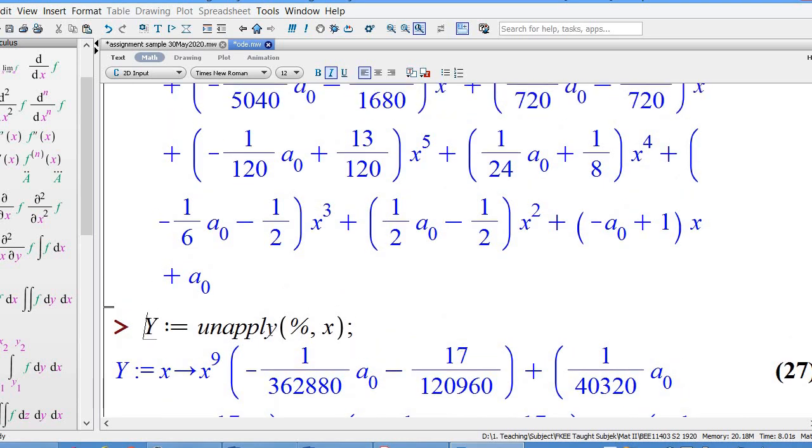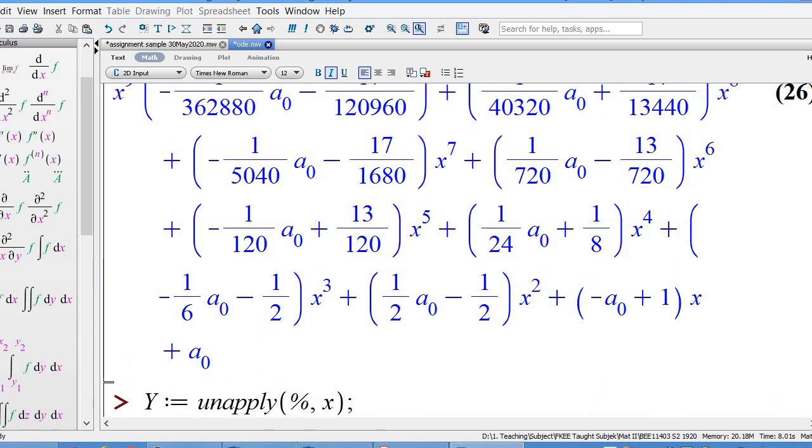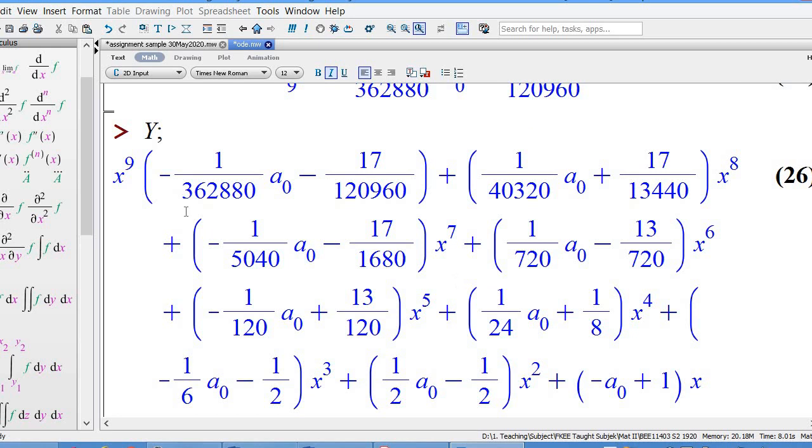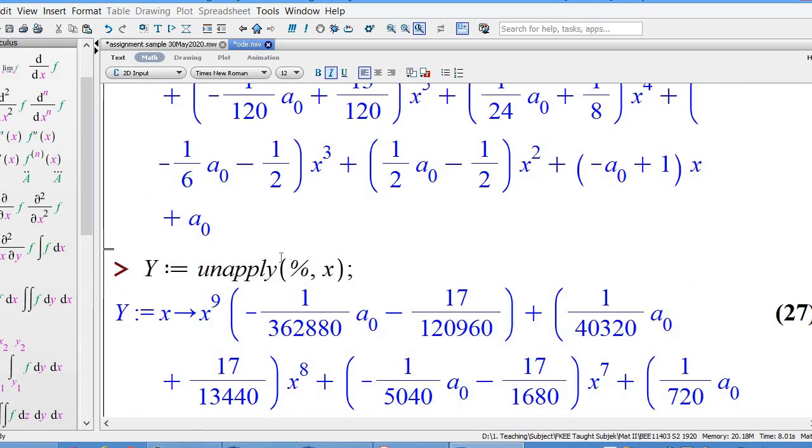Then the command unapply percent. Percent is actually the recently output, the latest output, which is here. This Y is only an expression, not a function. This command will take the latest output and make it become a function of x. Previously Y was only an equation, not a function of x. This statement makes it become a function of x.